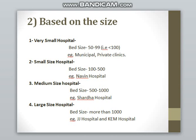Classification by size: very small hospitals have 50 to 99 beds, such as municipal or private clinics. Small hospitals have 100 to 500 beds, like local living hospitals. Medium-size hospitals have 500 to 1000 beds, such as Sharada Hospital. Large-size hospitals have more than 1000 beds, such as Jeju Hospital, Pagan Hospital, and Tata Hospital located in Mumbai.